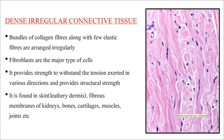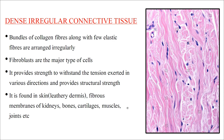Dense irregular connective tissue is made up of collagen fiber bundles along with few elastic fibers arranged irregularly. Fibroblast cells are the major cell type. It provides strength to withstand tension in various directions and structural support for the body. It is found in the skin, leathery dermis, fibrous membranes of kidney, bone, cartilage, muscles, and joints.